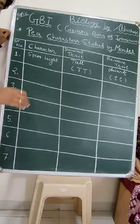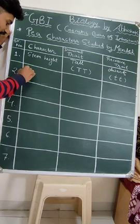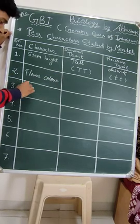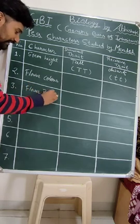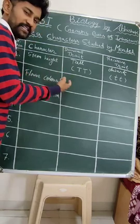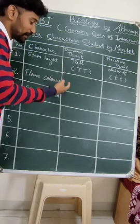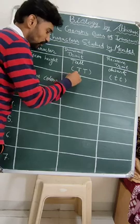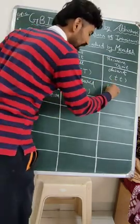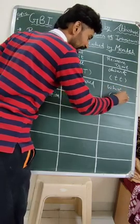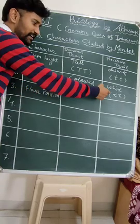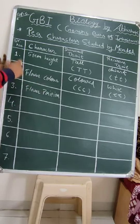The other 6 characters will be written in pairs, which makes them easier to understand. The first pair is flower color and flower position — these are the second and third characters. Flower color: sometimes observed as violet, pink, or purple, but most commonly referred to as 'colored.' Colored is the dominant trait and white is the recessive trait. In F1 and F2 generations, more colored flowers appear, with only a small appearance of white.